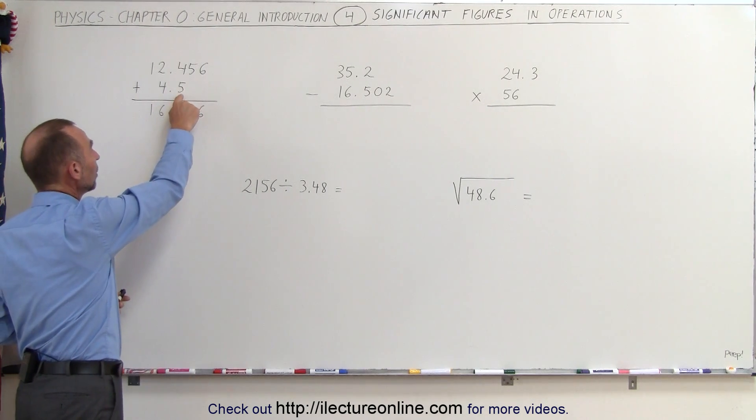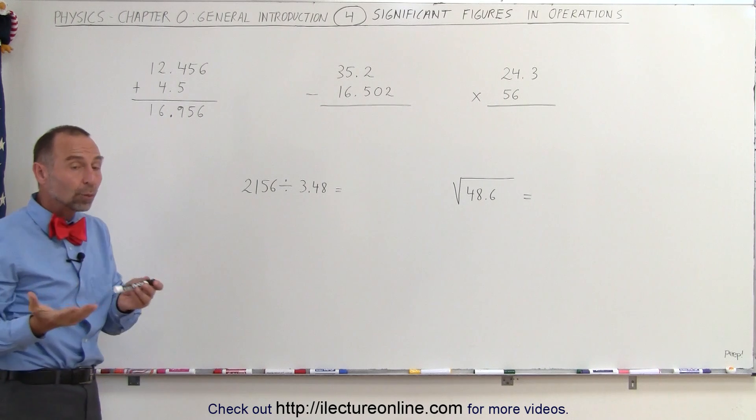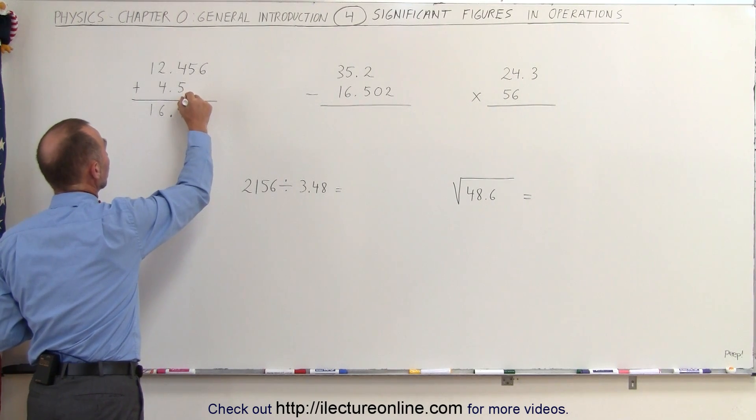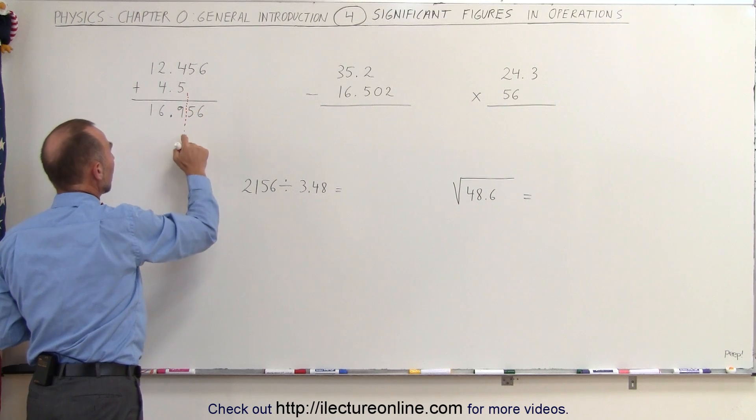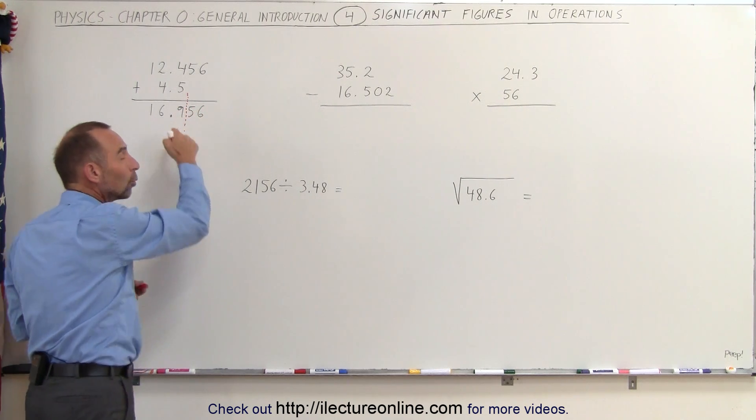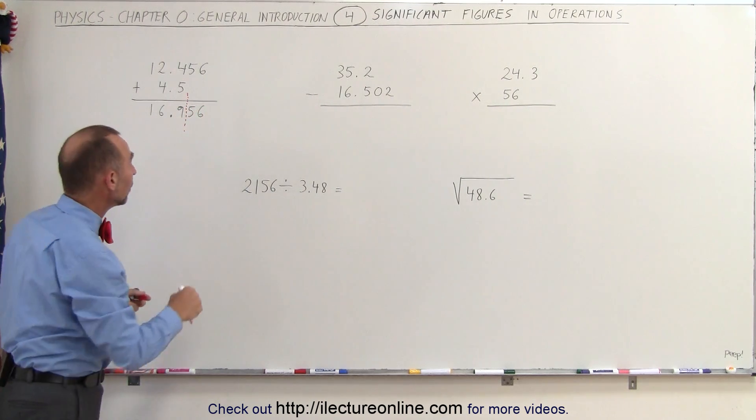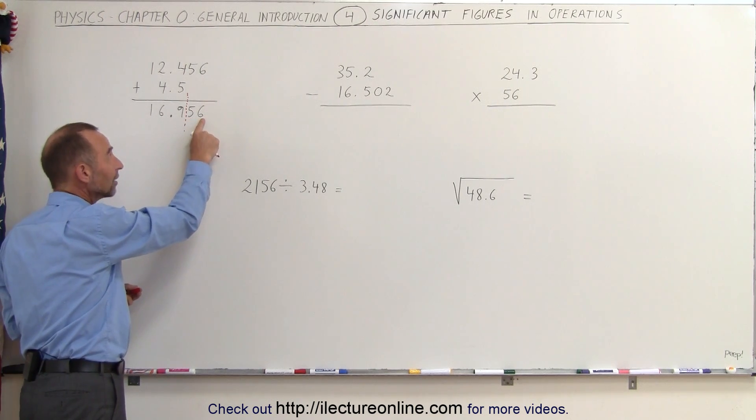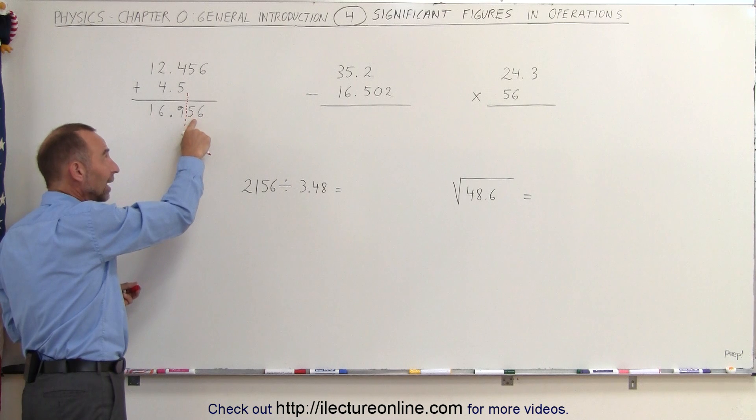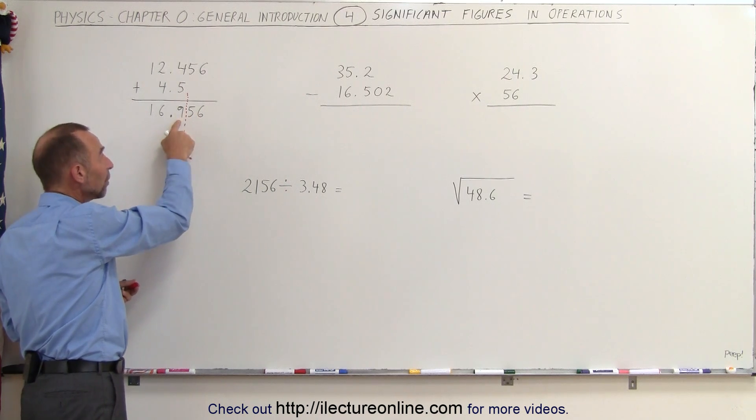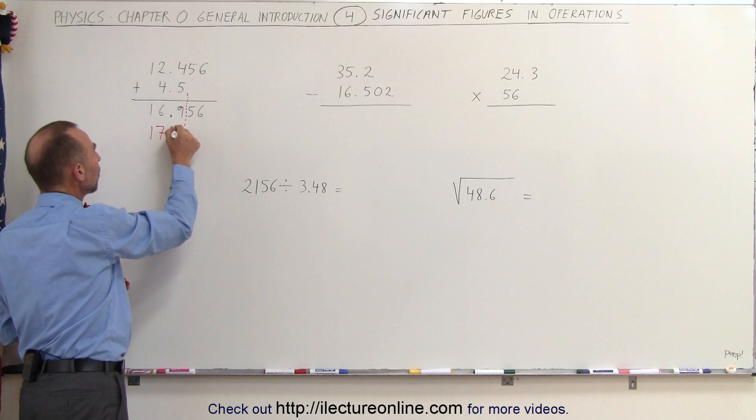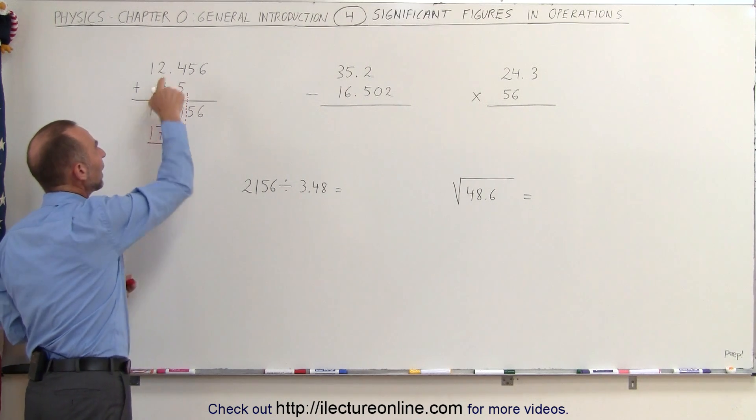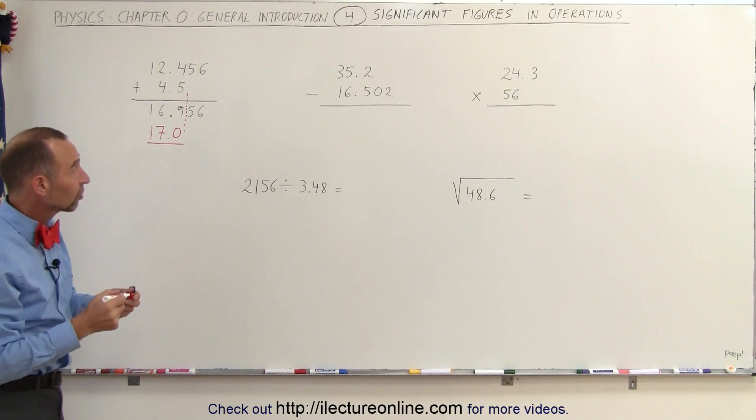Since this number has one, you should only have one decimal place here. That means you will have to round. So let me use my red pen here. So you're going to cut it off right here, but will this stay a 9 or will that be bumped to the next number? And since the next decimal place is a 5 and then you have a 6 behind it, 56 is greater than 50. Therefore, we need to bump this up and the answer should be 17.0 with three significant figures. That is the proper answer as far as significant figures is concerned.